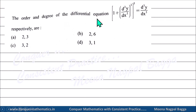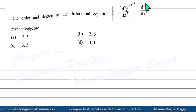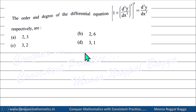Next: Order and degree of differential equation - 1 + (d²y/dx²) raised to some power, with d³y/dx³. Highest order derivative is d³y/dx³, so order = 3. Power of highest order derivative is 1, so degree = 1. Equation is in polynomial form - degree 1, order 3. Answer: order 3, degree 1.